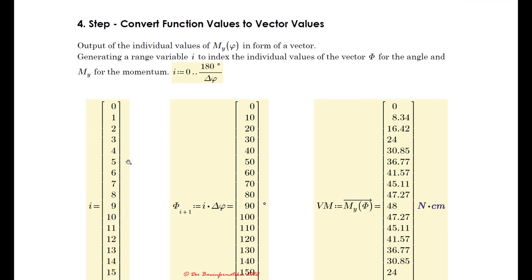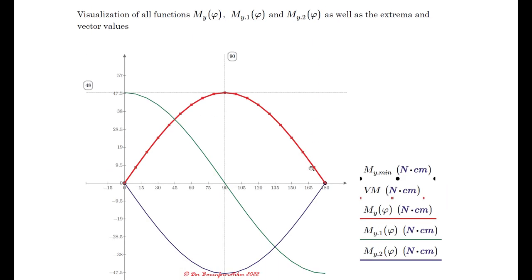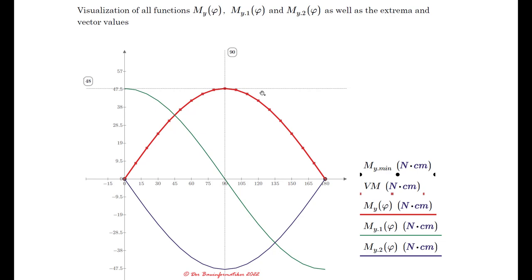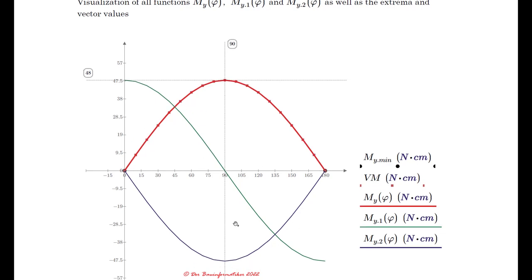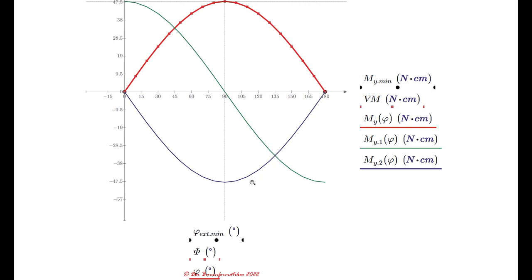In the fourth step, I'll show you how to transfer function values into vector values, which is quite important. The last step will be to visualize all the evaluated values — the vector, the function itself, the first derivative, the second derivative, the position of the local maximum, its value, and so on. You'll learn how to visualize all those things in a diagram.